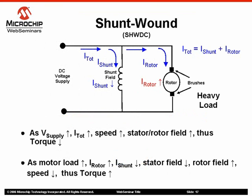Shunt wound brush DC motors have a field coil in parallel or shunt with the rotor. The current in the field coil and in the rotor are independent of one another, thus the total current of the motor is equal to the sum of the shunt current or stator current and the rotor current. During normal operation, as the supply voltage is increased, the total current of the motor will increase, causing the stator and rotor fields to increase.